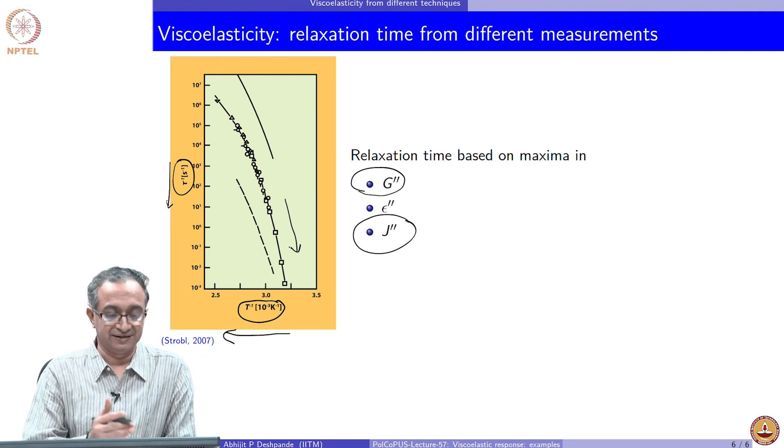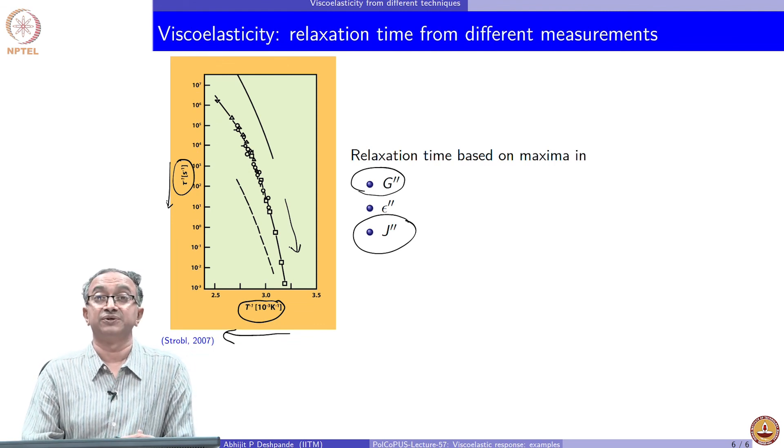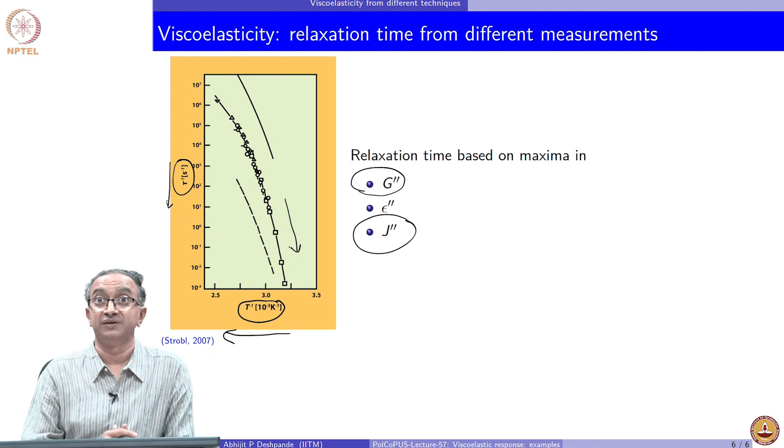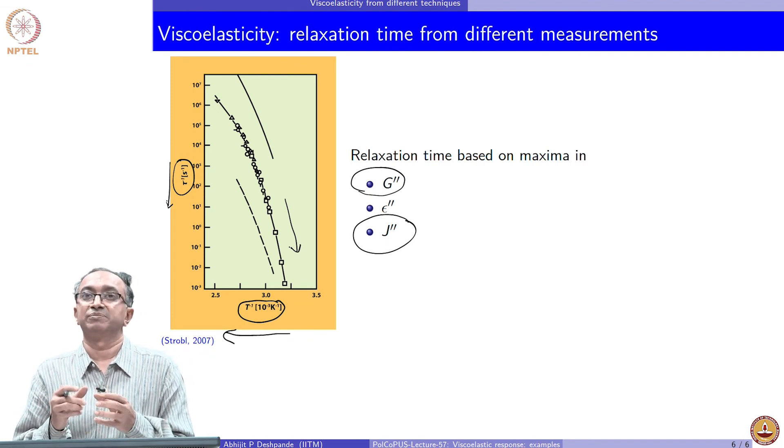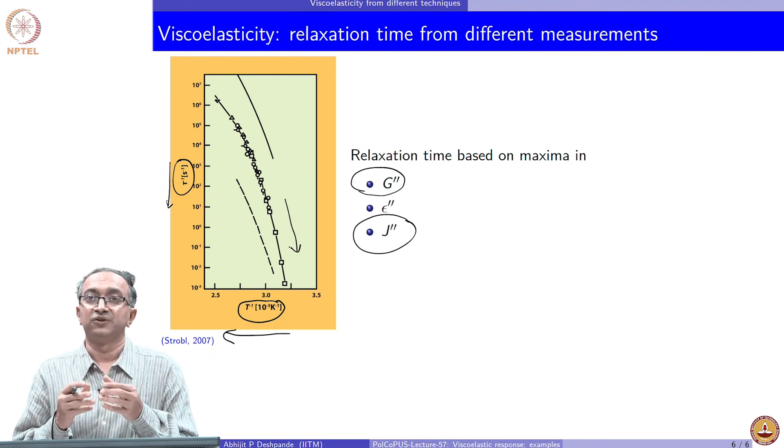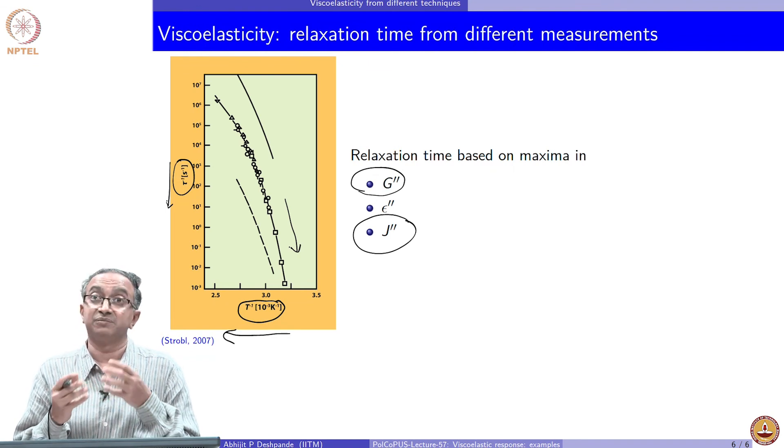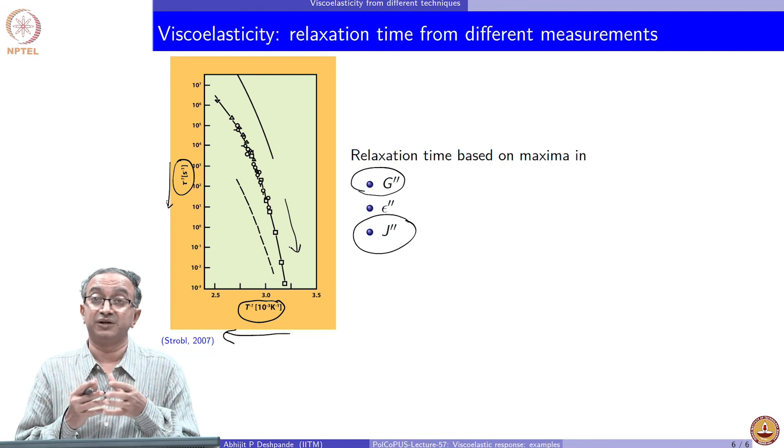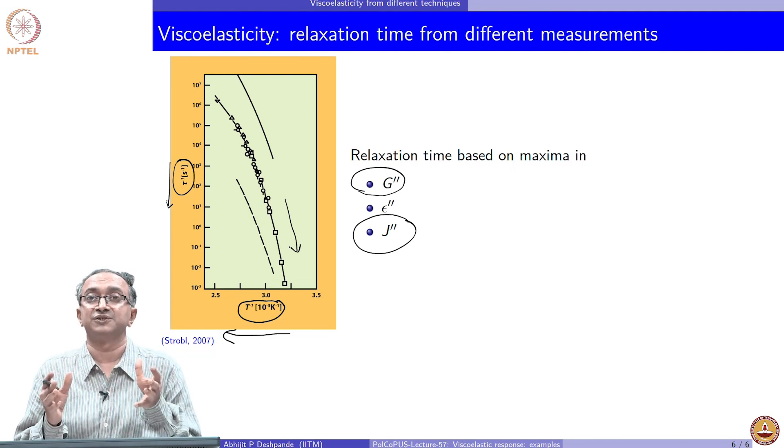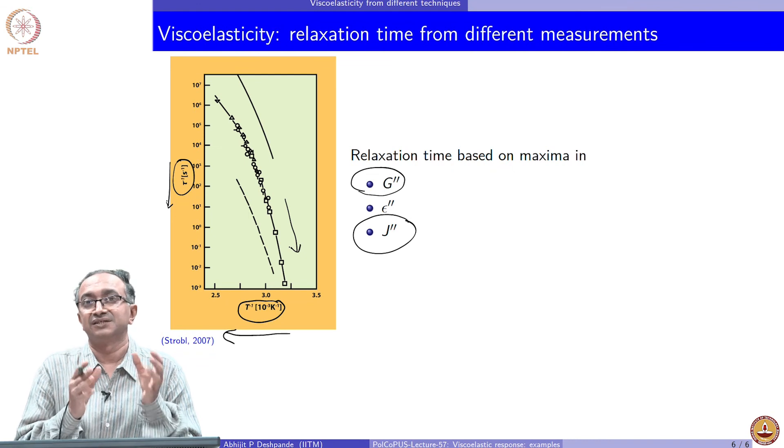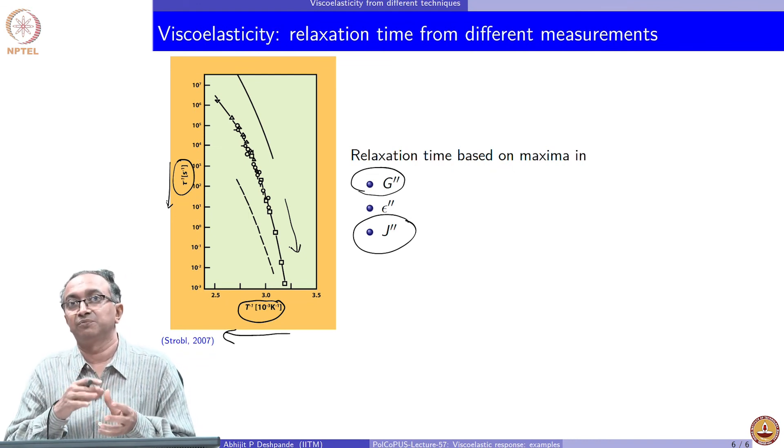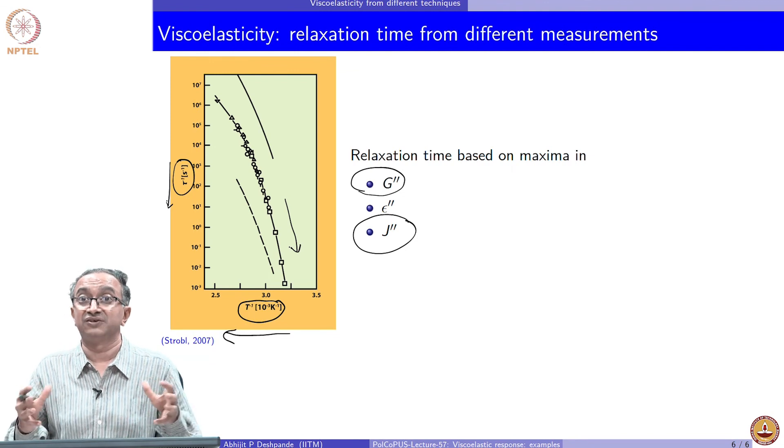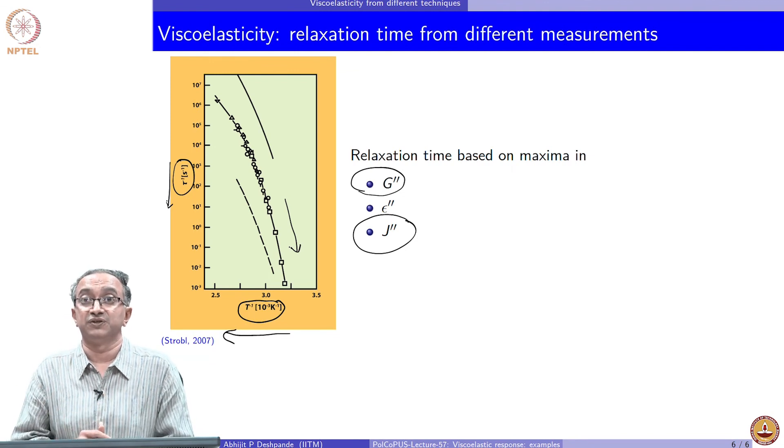So temperature is increasing as we go along here and time is also similarly increasing as you go along here. So lower and lower temperature implies higher and higher time. And you can see that there is an order of magnitude difference in terms of relaxation times when you go from one technique to the other because in one case, you are measuring far local phenomena in case of dipole. In the other cases, it may be different phenomenon. But you can see that overall qualitative response matches. And this is something which we always do in terms of looking at viscoelasticity from different perspectives and then try to rationalize the overall response of materials.